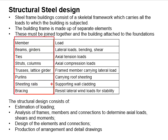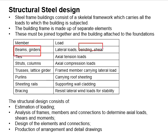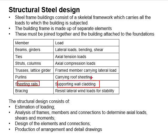Each of these members has its own functions and is normally designed to withstand specific loads. Beams and girders are used to sustain lateral loads, designed to carry bending and shear loads. Ties are normally used to withstand tensile loads. Struts and columns are mainly for compression loads. Trusses and lattice girders are frame members carrying lateral loads. Purlins are meant to carry roof sheeting, and sheeting rails are used to support wall cladding. Bracings are provided to resist lateral forces for the stability of the structure.